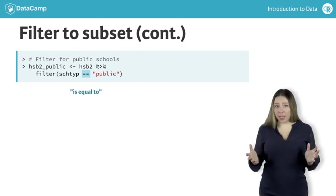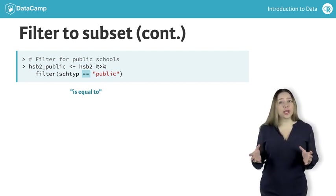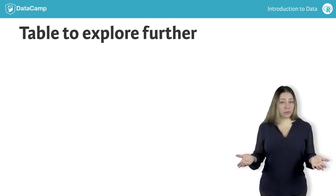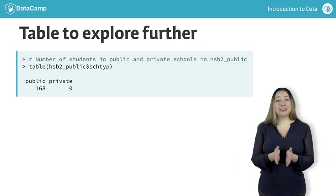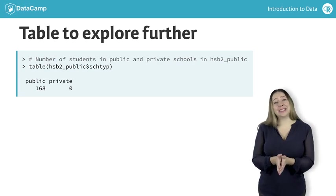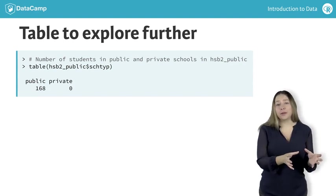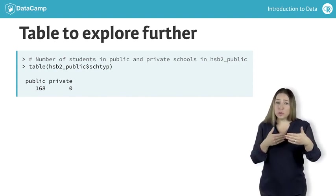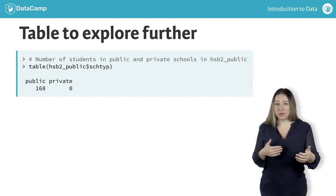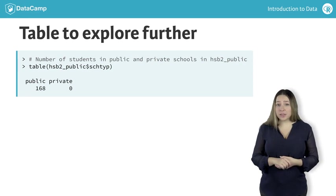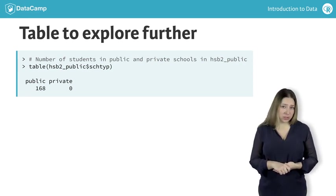Now if we make another frequency table of school type in the subsetted data set, we should only see public school in the output, right? Wrong — well, not entirely wrong. Indeed, the table only shows 168 students in public schools in this data set and none in private schools. But since we filtered out students from private schools, it's still a bit unexpected that this level shows up in the table output in the first place. This has to do with how R handles factors.